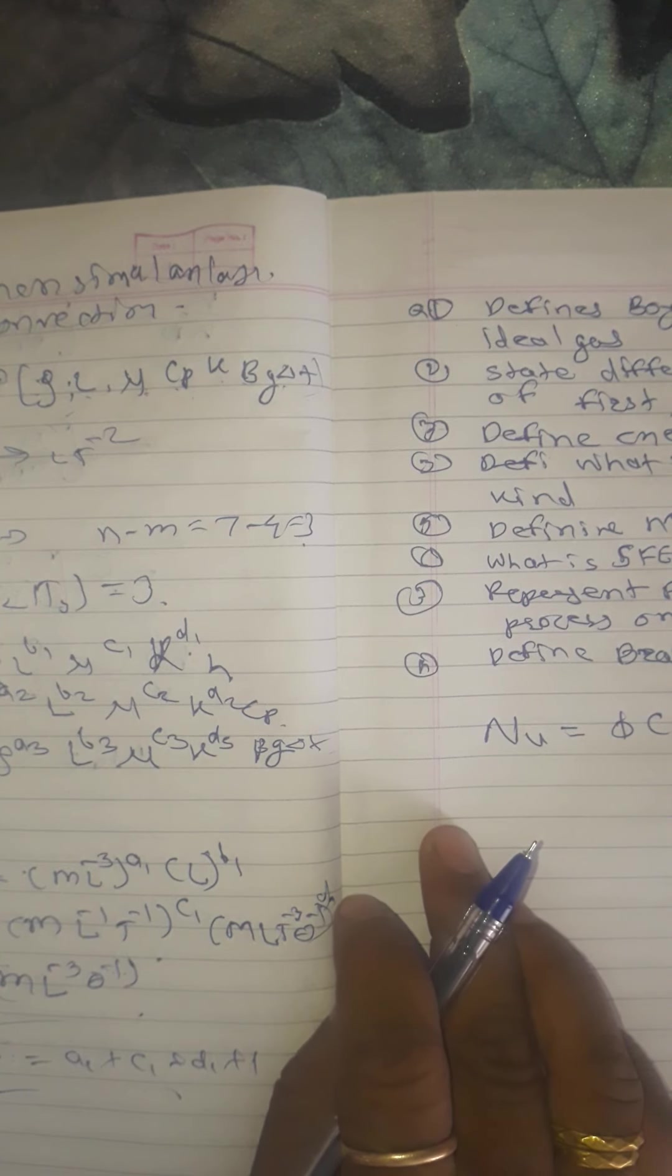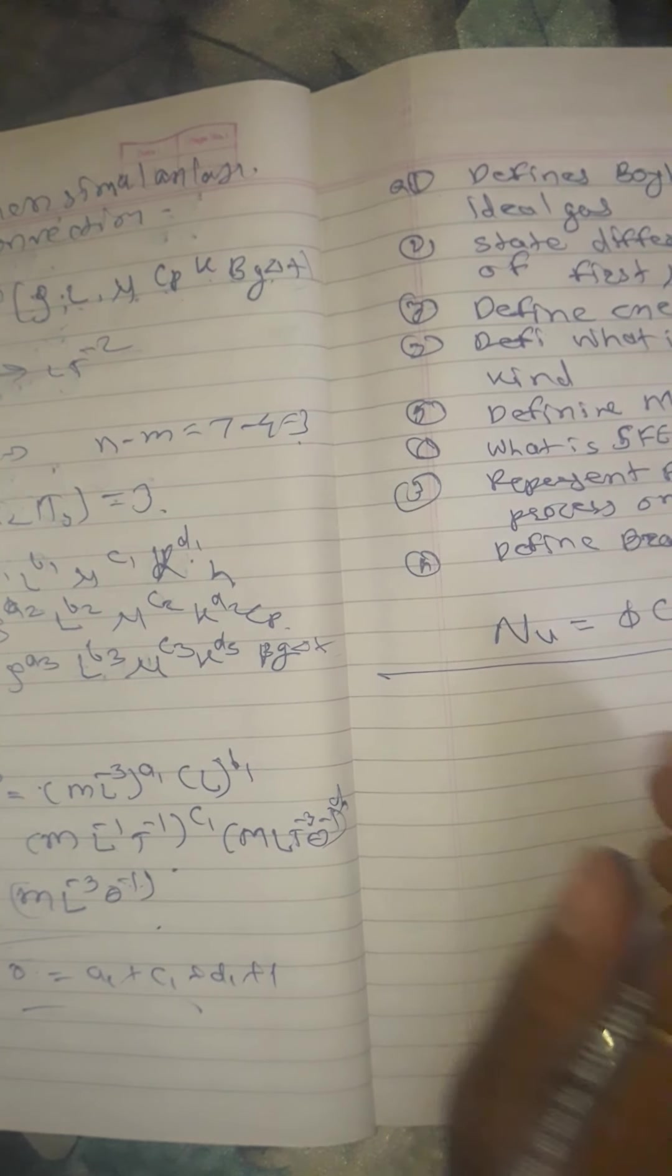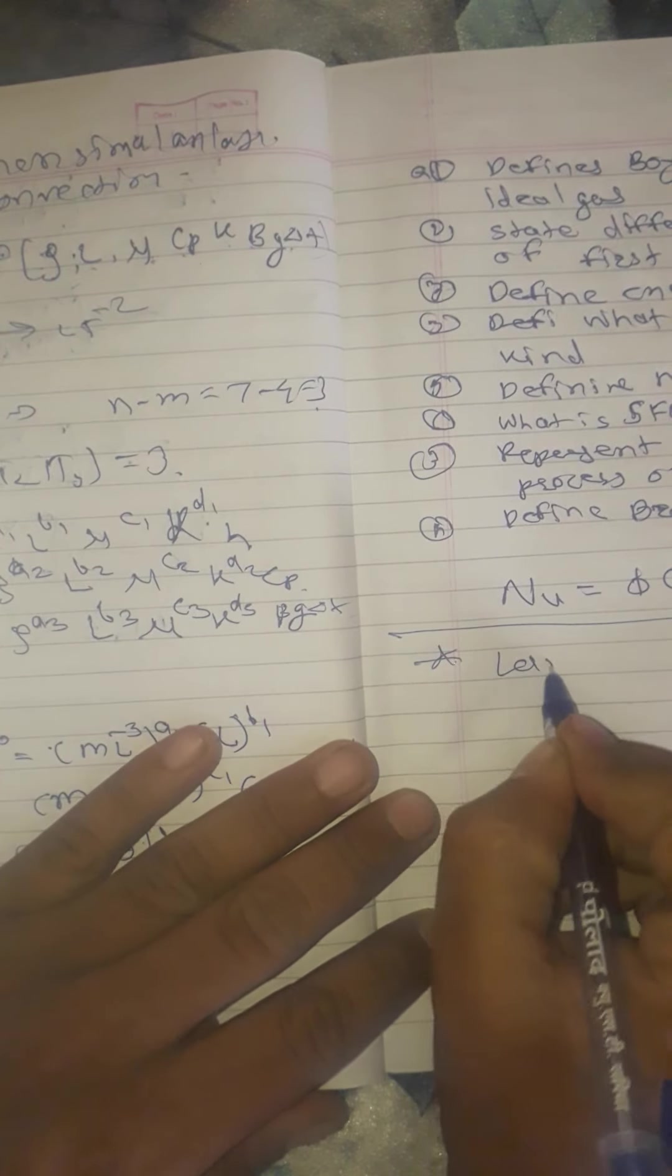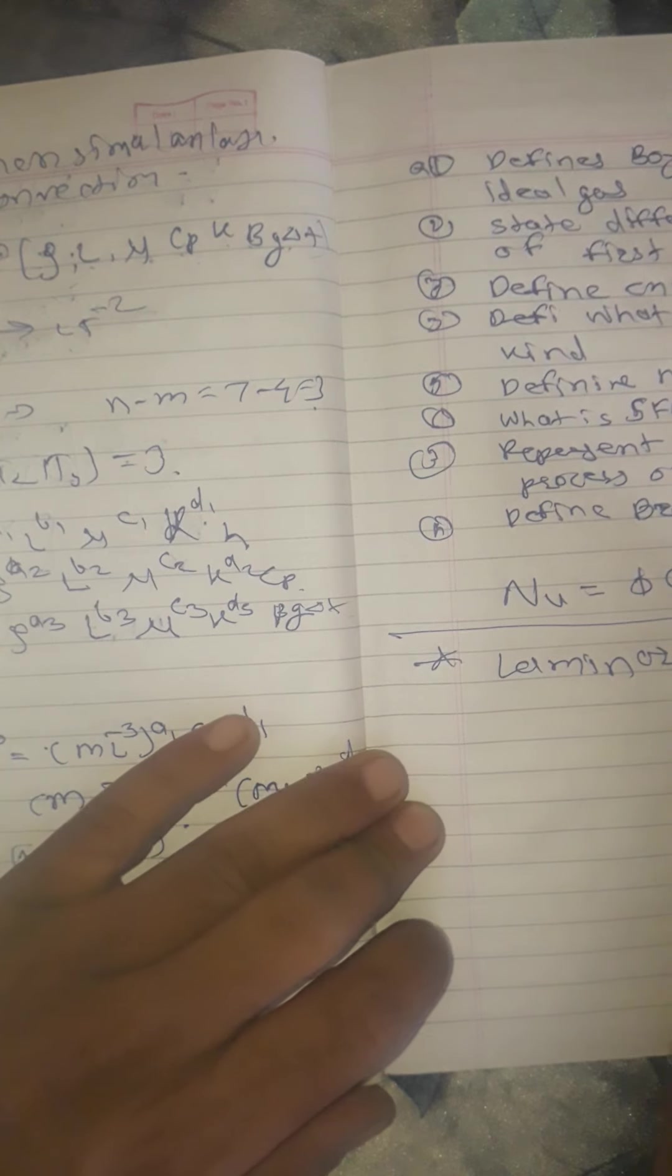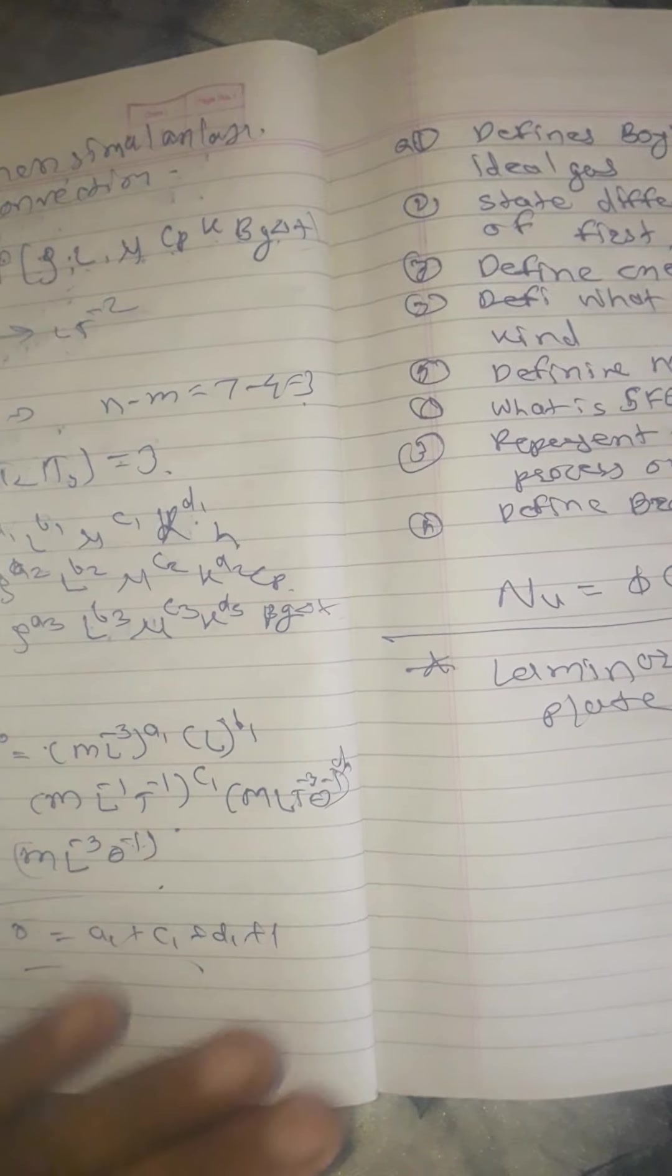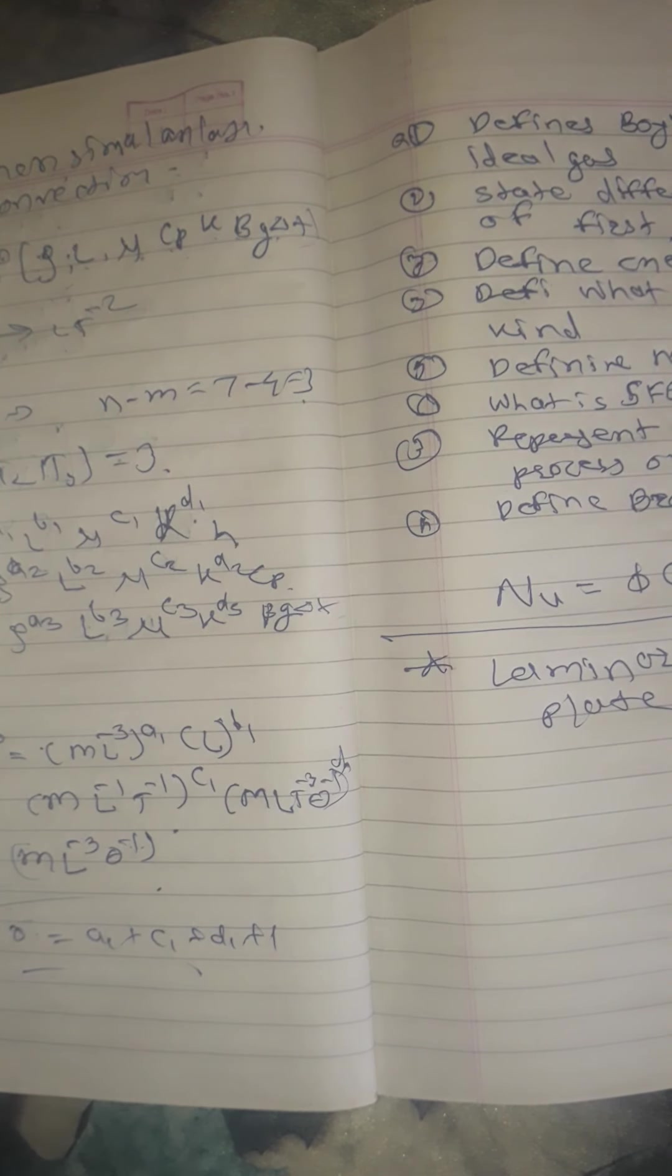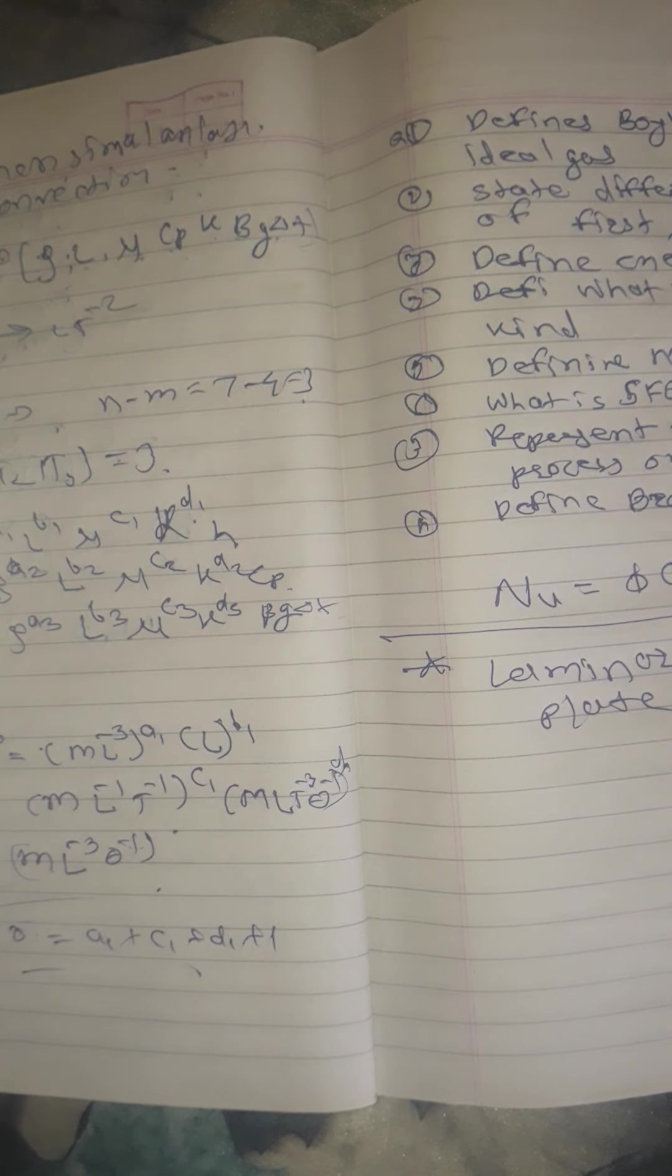So let's start with the laminar flow over a flat plate. The concept of boundary layer was first introduced by L Prandtl in 1904 and since then has been applied to several fluid flow problems.